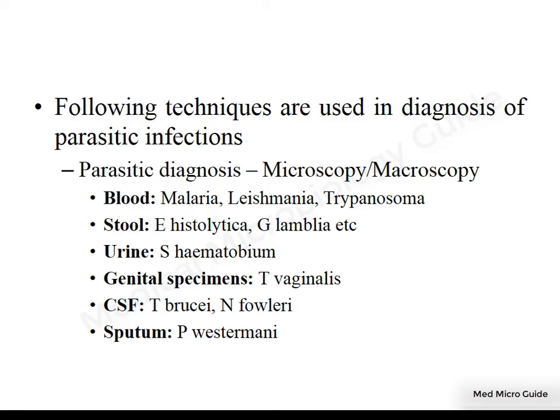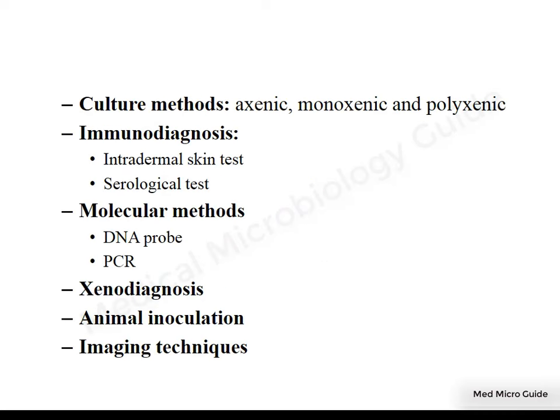For parasites which infest the intestine, you collect a stool specimen. For those infesting the urinary bladder or kidney, collect urine. For genital organ infections, collect genital specimens. For CNS infection, collect CSF. For lung infection, collect sputum. So the specimen is collected according to the clinical suspicion and site of infection. Culture is generally done for research purposes — to extract antigens or study pathogenesis — and is not typically used for diagnostic purposes, though for some parasites culture may establish diagnosis.